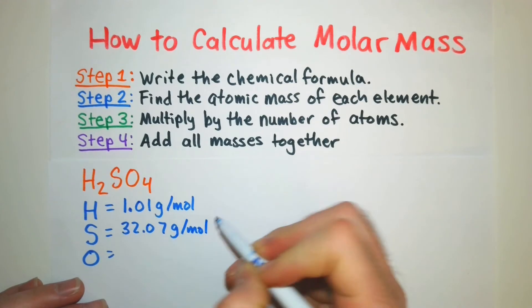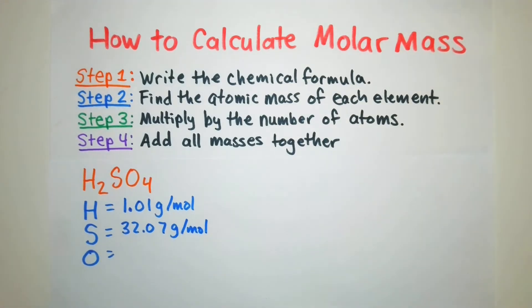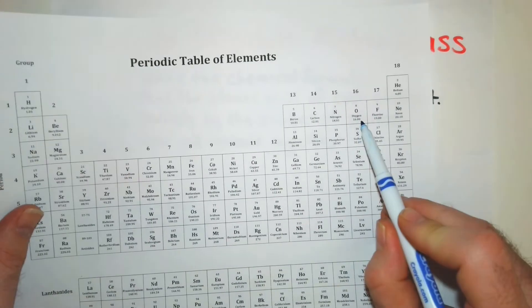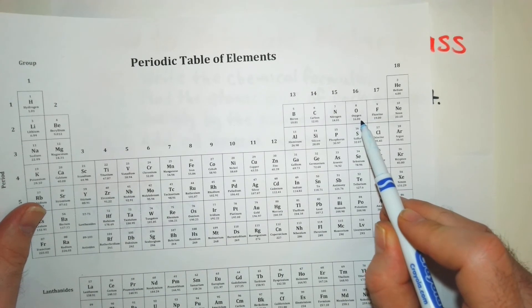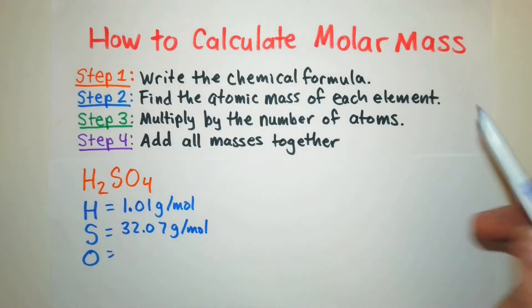Well it's kind of small on the screen, you can download a periodic table in the description below or use your favorite one. And for oxygen we have oxygen right here and it's 16.00 grams per mole.